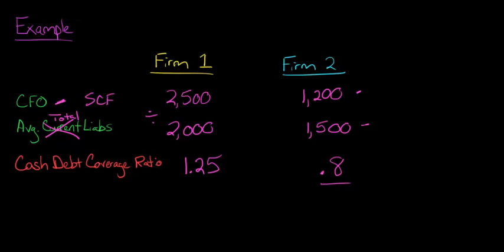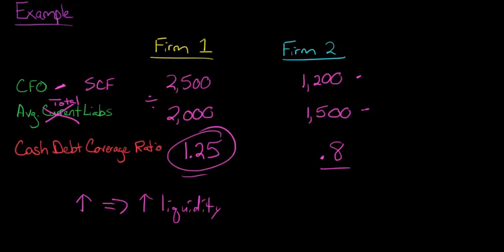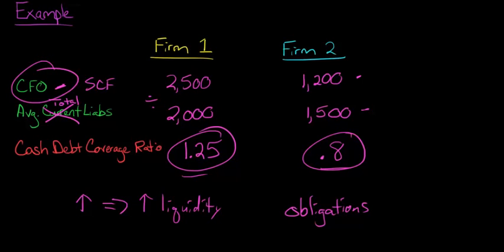How do we interpret these ratios? As with all the liquidity ratios we've looked at in the past, a higher number implies higher liquidity. Firm 1 has a cash debt coverage ratio of 1.25, which is higher than firm 2's 0.8. This implies that when we look at all the firm's obligations — its total liabilities — and the amount of cash the firm is generating from its operations, firm 1 is in a better position to satisfy those obligations, both current and long term, from its cash flows.